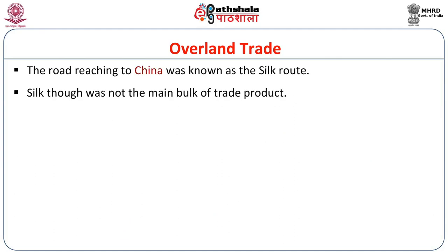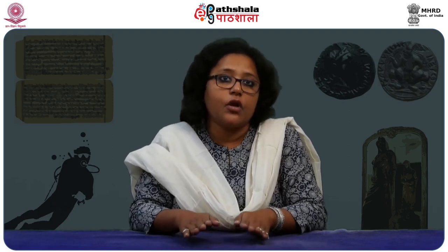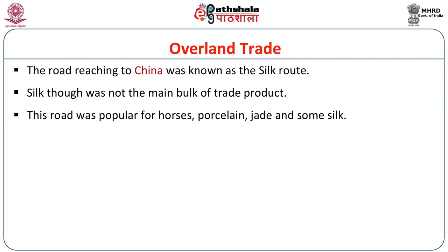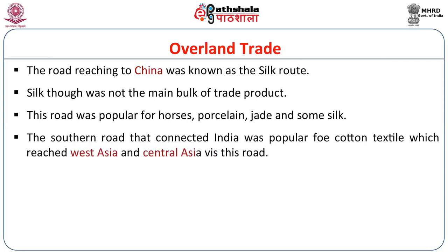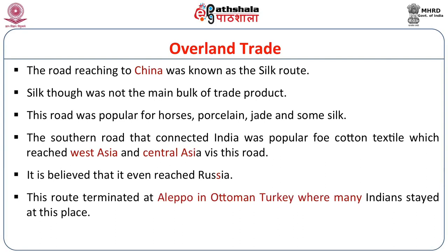Silk, though, was not the main bulk of trade anymore at this point of time. The main bulk of trade was done in porcelain and carpets, along with some Chinese silk in small portions. This road was popular for horses, jade, and silk items not produced in parts of India. The southern road that connected India was popular for cotton textiles, which reached West Asia and Central Asia via this road, and it is believed it even reached Russia. This route terminated at Aleppo in Ottoman Turkey, where many Indians reportedly lived.